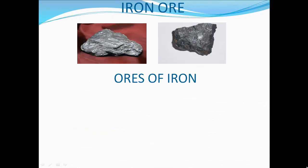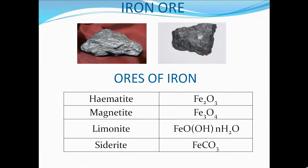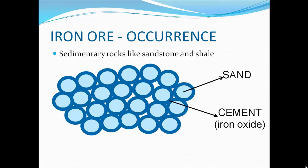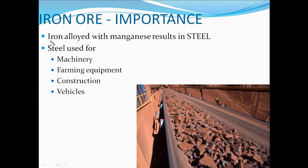The first metallic mineral is iron ore, available in India in abundance. The ores of iron are hematite, magnetite, limonite, and siderite. They are primarily found in sedimentary rocks like sandstone and shale, where intramolecular spaces are filled with iron oxide and extracted using certain techniques. Iron is alloyed with manganese to make high-quality steel, which is used for making machinery, farming equipment, construction tools, and vehicles.